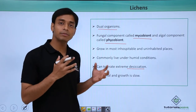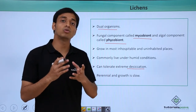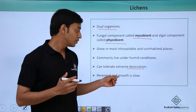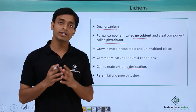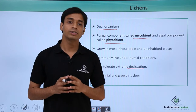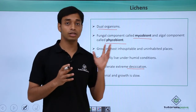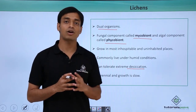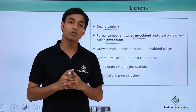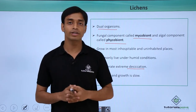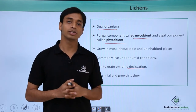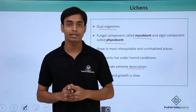They are perennial, meaning they can be found growing for more than 2 years, and their growth is very slow. It is believed that in the arctic region, the lichens that are found are believed to be about 4,500 years old. So their growth is very slow and they are perennial.